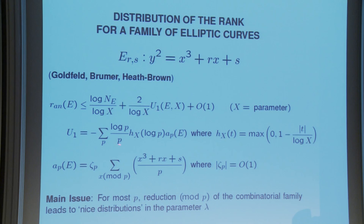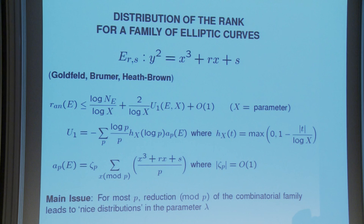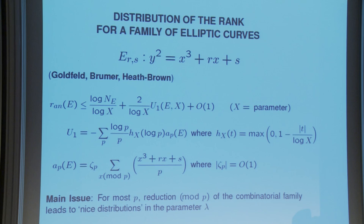Since we can't do that double cancellation, we have to do an average. People have done this starting from the work of Goldfeld, and one considers exponential moments as needed to control the number of lattice points. But all these arguments are for nice families. What I stated was for almost all smooth numbers, so the underlying elliptic curves form a family which is not arithmetic at all — it's a combinatorial family. What is nice is that when you use the explicit formula, you only care about the behavior mod p for each individual p. So you reduce this family mod p, and most of the work was to show that this combinatorial family, when you reduce it mod p, behaves like a nice family.